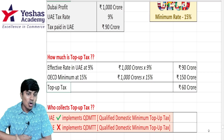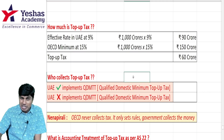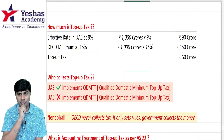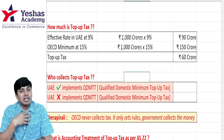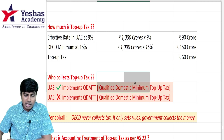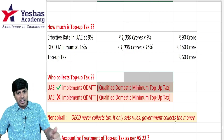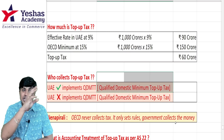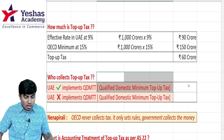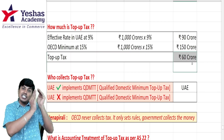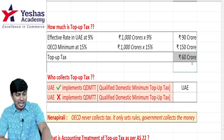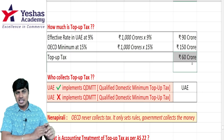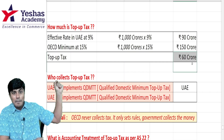Who collects this top-up tax? UAE, which is welcoming people, has the option to correct their mistake. The UAE government, if they correct their mistake by increasing their tax rate — by introducing one new tax called Qualified Domestic Minimum Top-Up Tax, QDMTT — then the UAE government will collect this top-up tax of 60 crores from TCS UAE. The subsidiary which is in United Arab Emirates will pay 60 crores of top-up tax to the UAE government, because the UAE government has now introduced QDMTT.